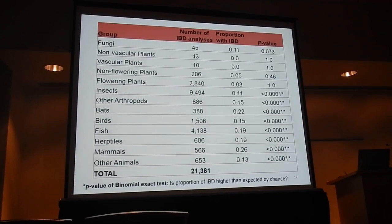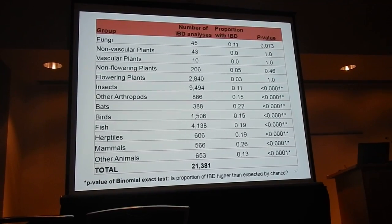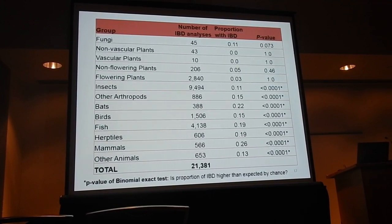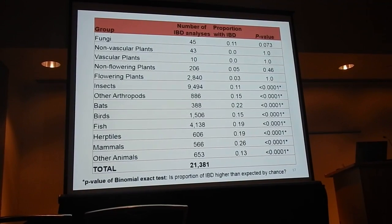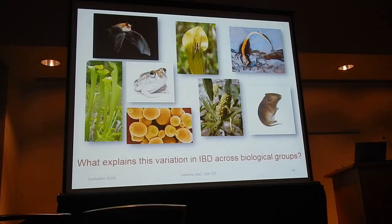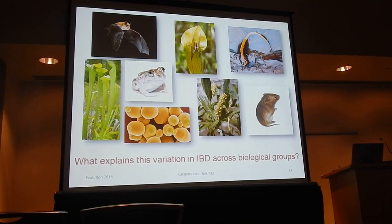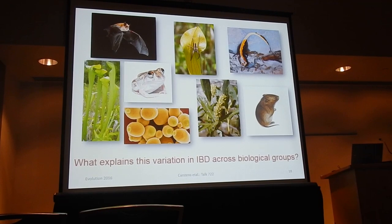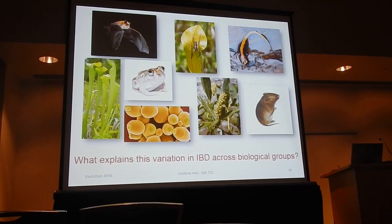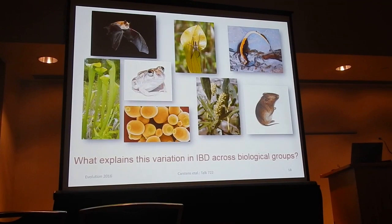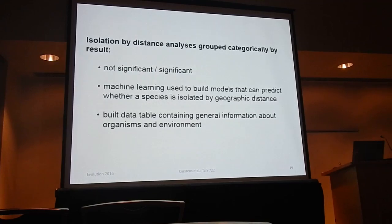What we really need to do is think about all of the different kinds of life history traits and environmental traits that these species might have and try to find the ones that are actually predicting whether or not we observe isolation by distance. This is challenging. In my lab we're not focused in any one organism — we work on a bunch of different species — and we want to compare these species in bigger analyses to see what's causing these patterns.